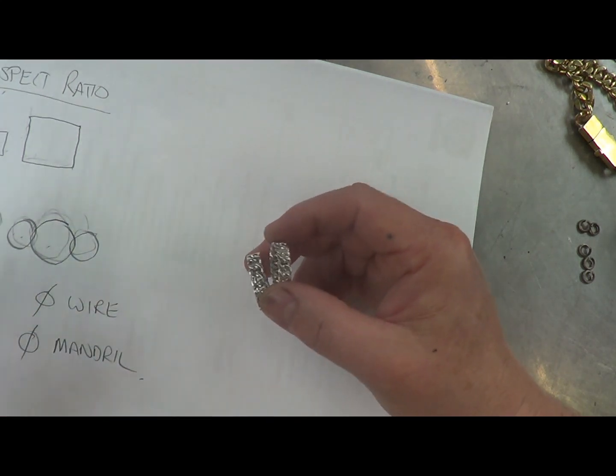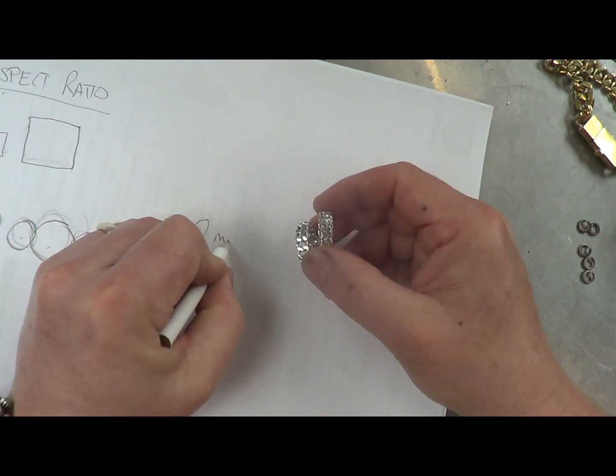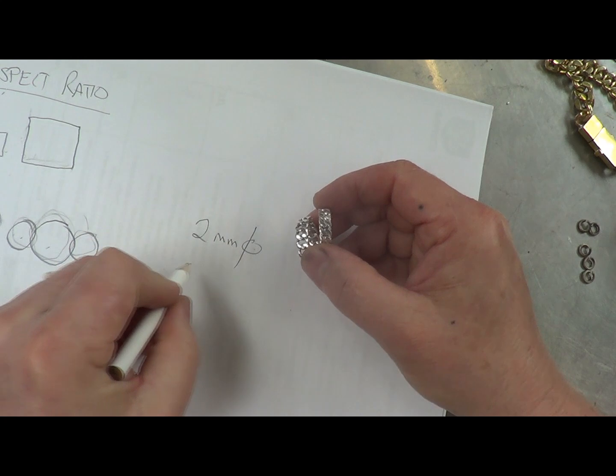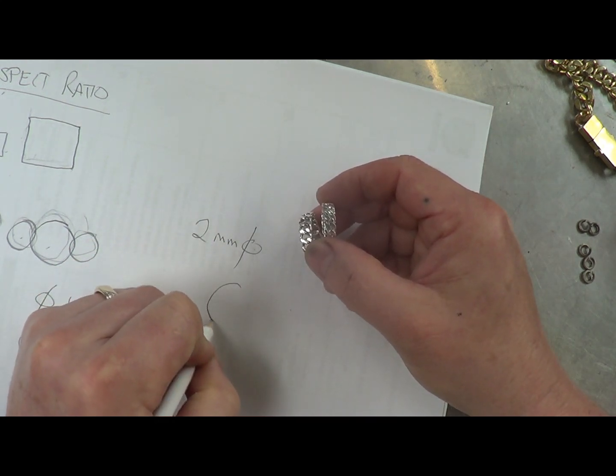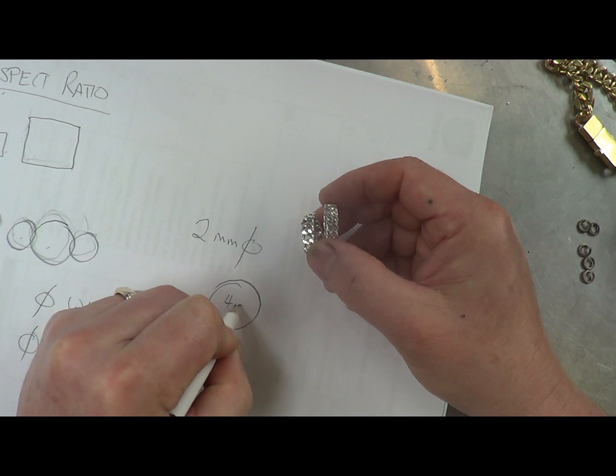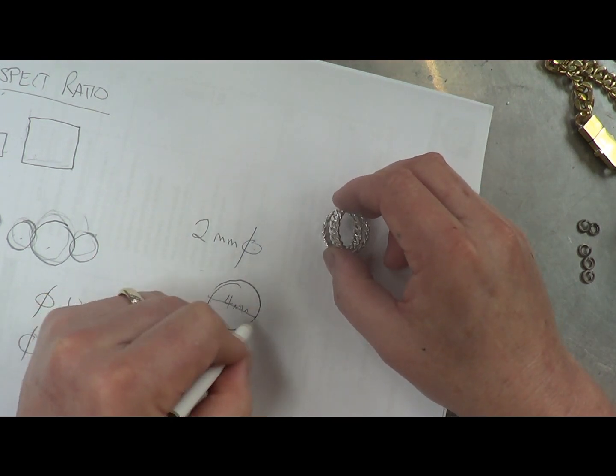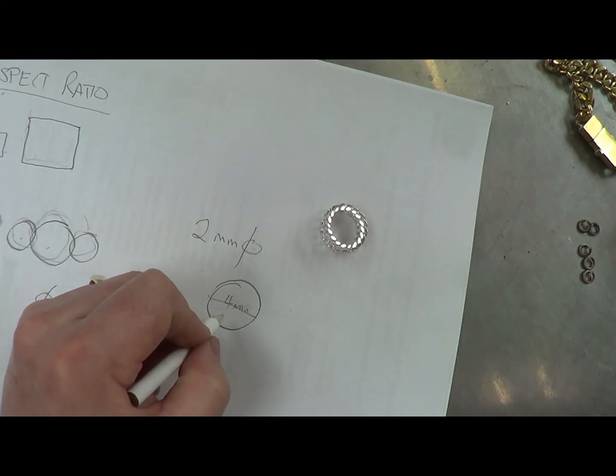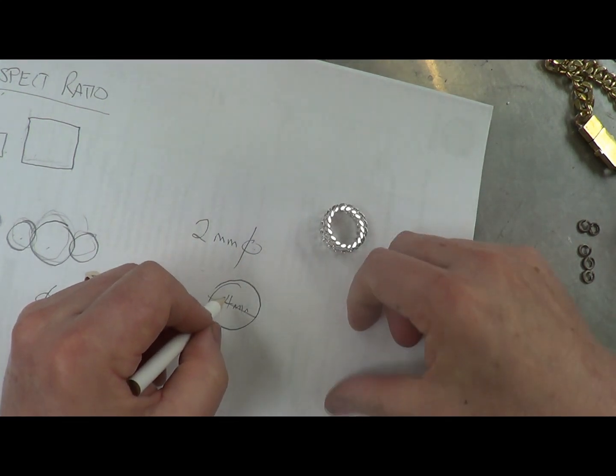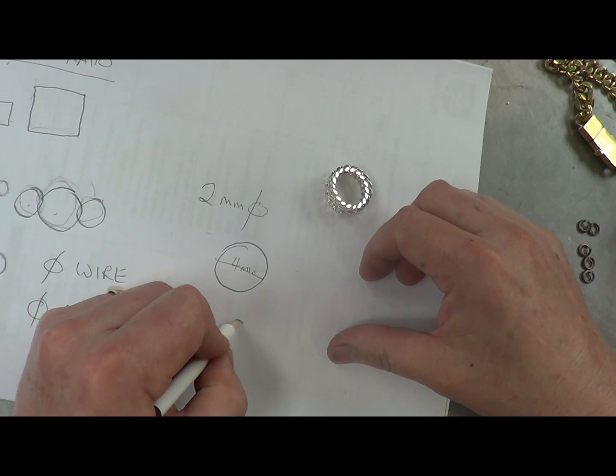So I'm using two mill wire, two millimetre diameter wire. That means the mandrel size that I wrap it around has to be at least four millimetres from here to here because two wires have to fit inside that.